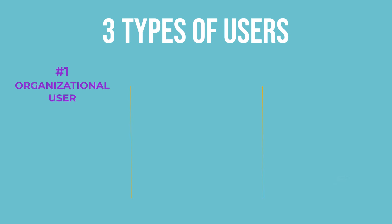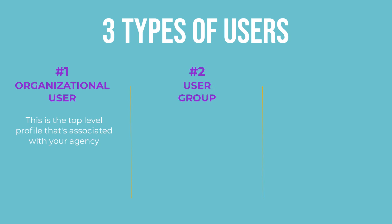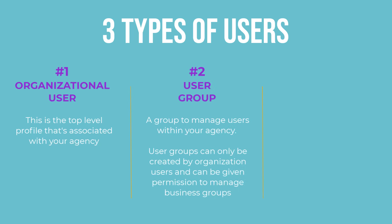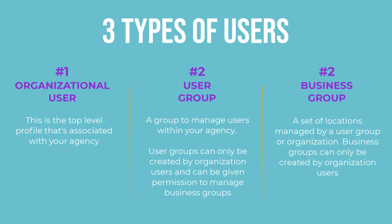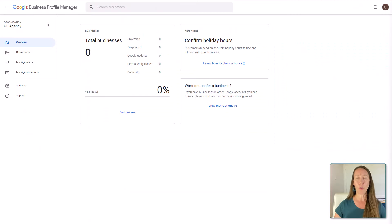The first is an organizational user — this is really your agency, the top-level account associated with your agency. The second type of user is a user group, which is a group to manage the users within your agency. These groups can be created by the organizational users and can be given permission to manage business groups. And what are business groups? That's the third type — a set of locations that are managed by a user group or the organization. These groups can only be created by organizational users.